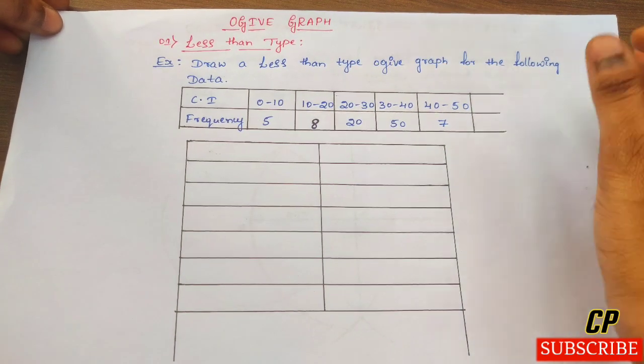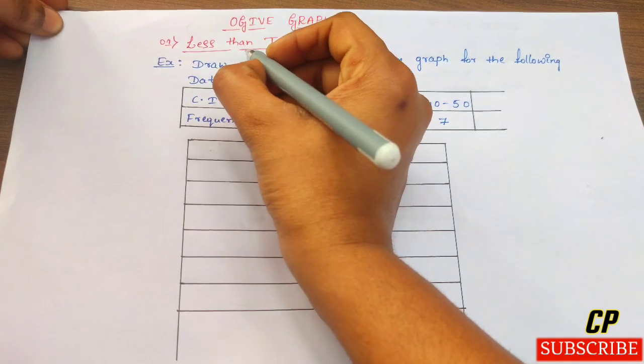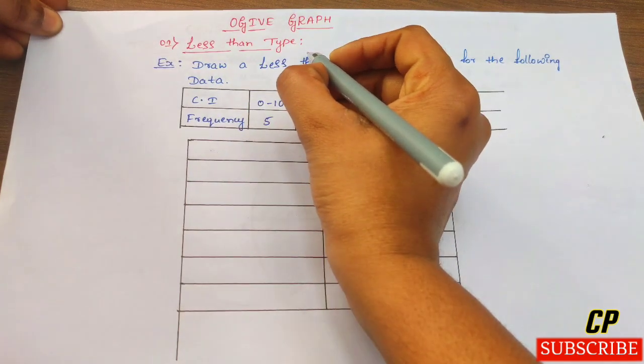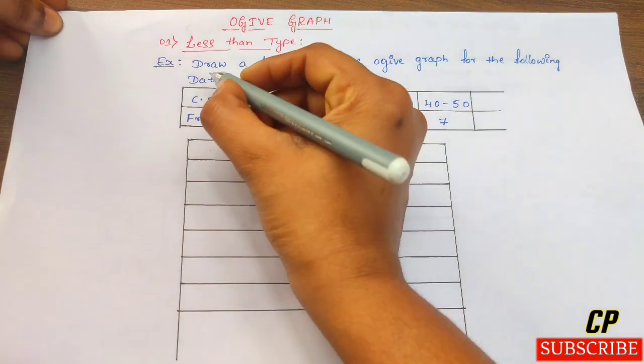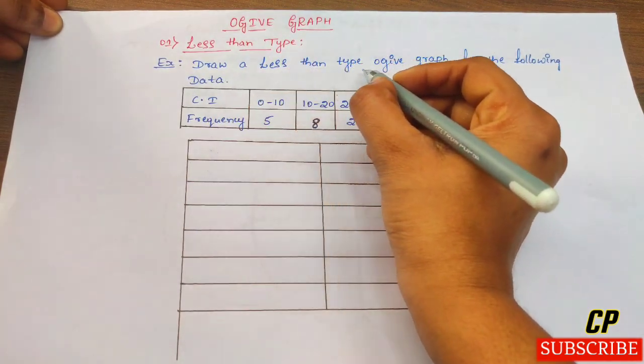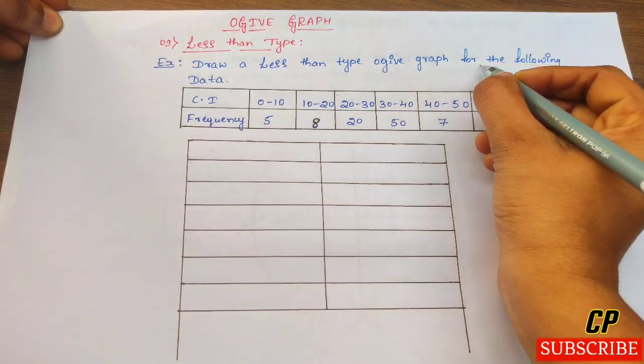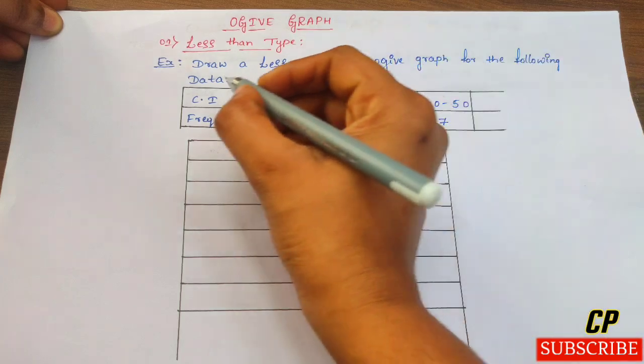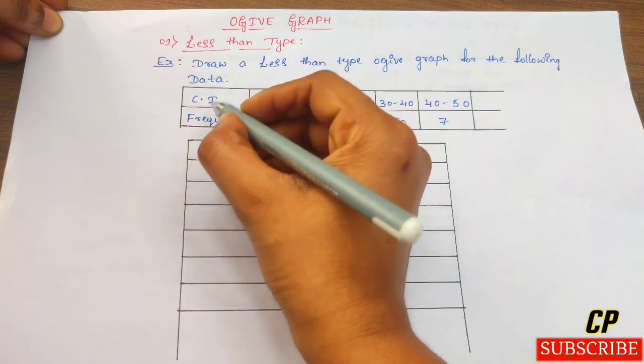First, let's draw a less than type Ogive graph for the following data.